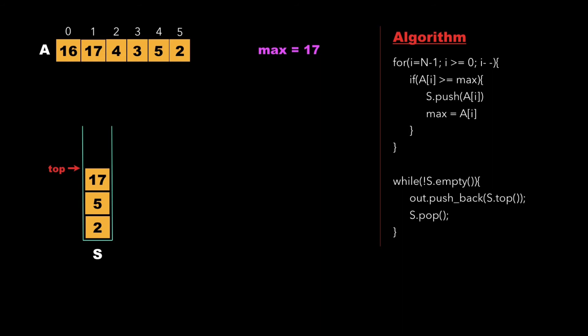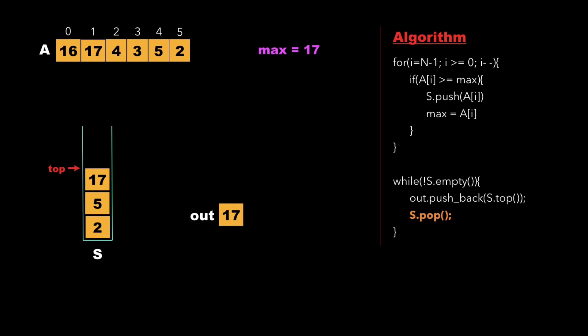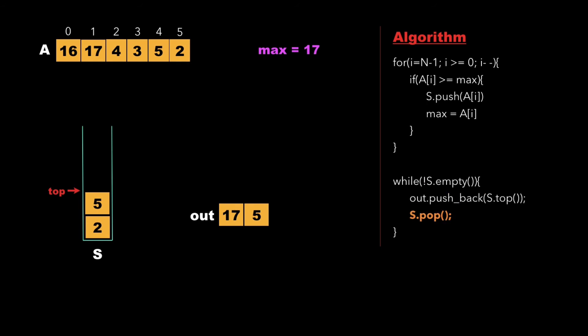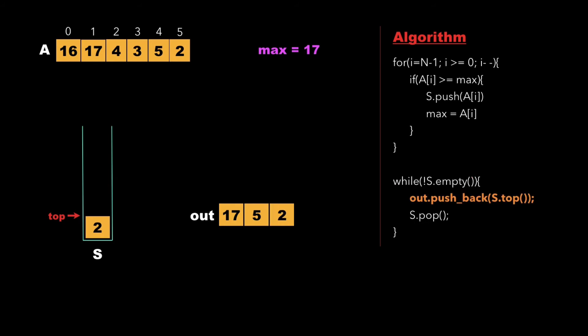The elements of the stack are 17, 5, and 2 from top to bottom. We access these elements by running a while loop with the condition that the stack is not empty. We create an output vector, then push the top of the stack into this output vector and pop it. We repeat this for 5 and then 2. Finally, the stack is empty and our output vector contains the leaders: 17, 5, and 2.